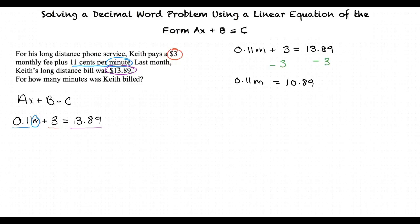Now, we are going to divide both sides by 0.11, and we are left with m equals 99.